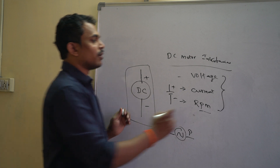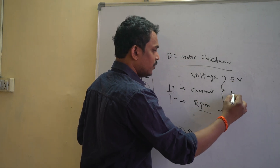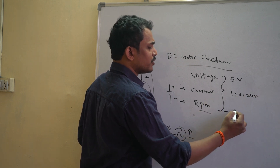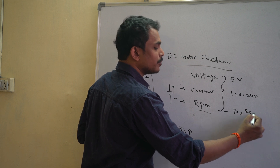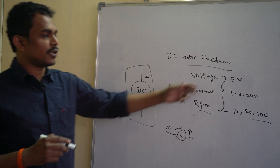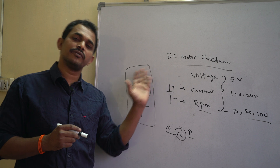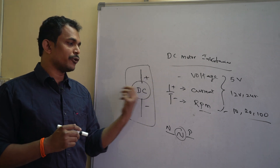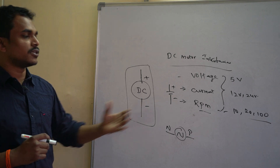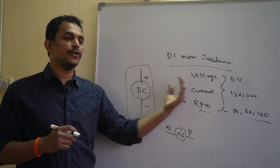Motors are available from 5 volts onwards — 5V, 12V, or 24V — and with different RPM ratings like 10, 20, 50, or 100 RPM. So whenever you are going to control DC motors with different characteristics, you need to understand what approach to take with your controllers.